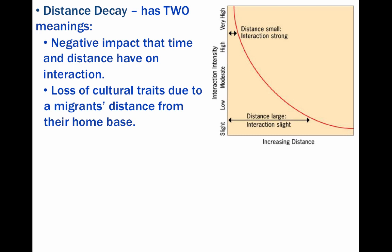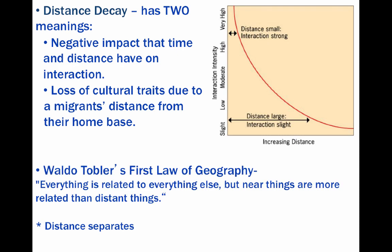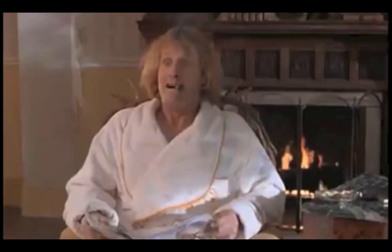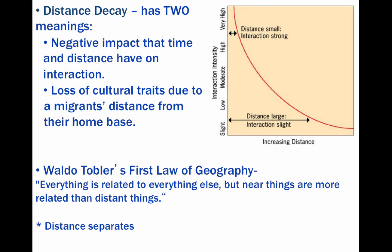This all relates to one of the most fundamental laws we deal with in this course — Waldo Tobler's first law of geography. This law states that everything is related to everything else, but near things are more related than distant things. Ultimately, distance separates.